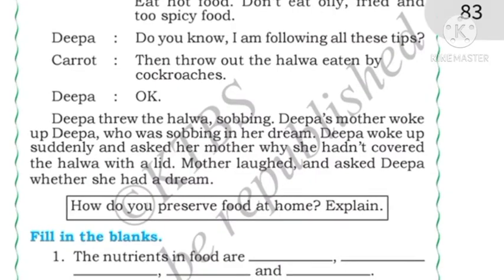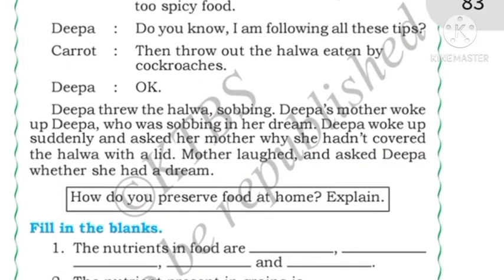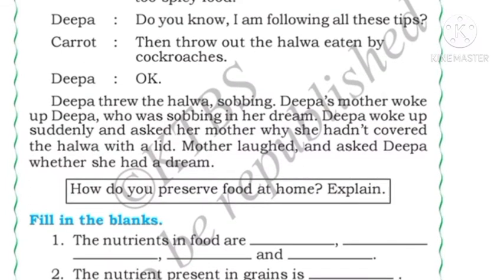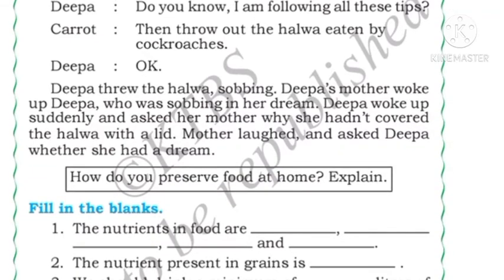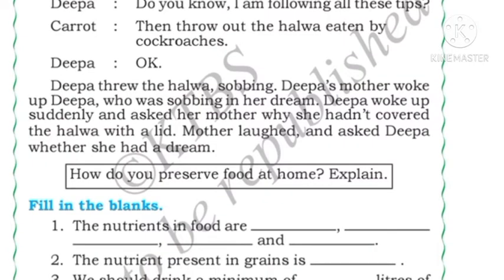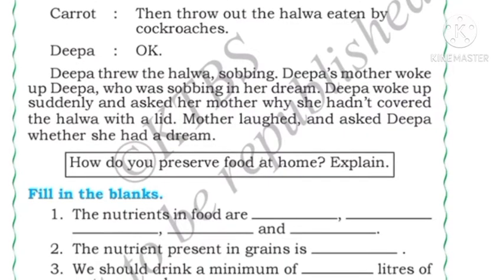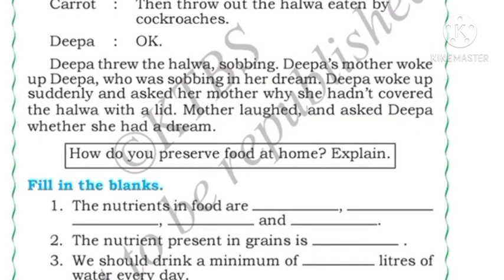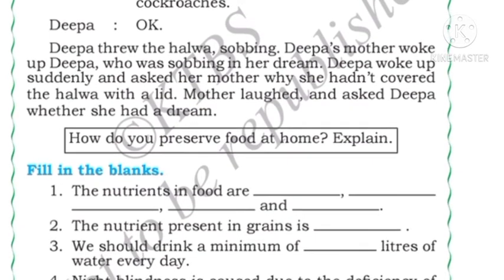Deepa says she is following all these tips. Carrot tells her to throw away the halwa that was eaten by the cockroaches, so Deepa throws it away. Then Deepa's mother woke her up — she had been sobbing in her dream. Deepa suddenly asked her mother why she had not covered the halwa with a lid, and her mother laughed and said it was just a dream.